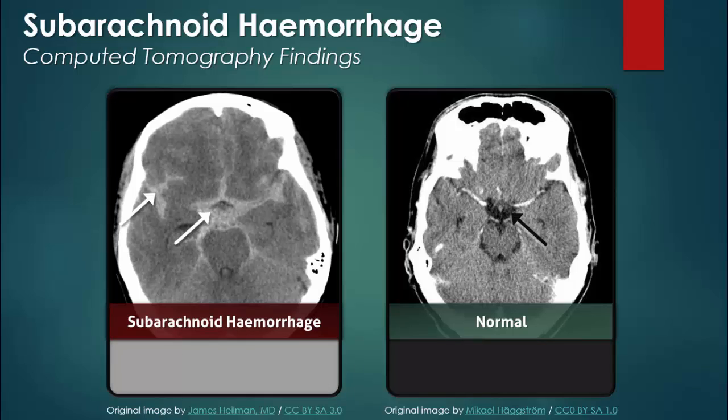So when there is suspicion for a subarachnoid hemorrhage, inspect the non-contrast CT for areas within the subarachnoid space to be a light shade of gray, as opposed to the normal dark gray.